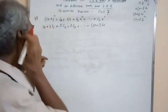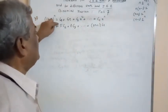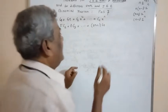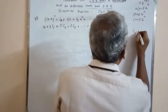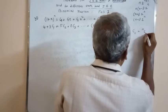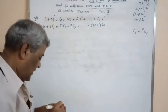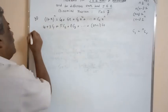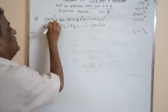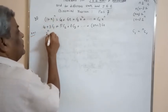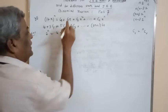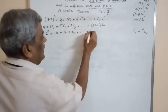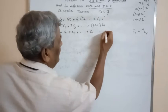Given that this binomial expansion equals that, we need to find the value. Here, cr is equal to nCr. This is the formula. Now, putting x=1 on that, we get 2^n = c0 + c1 + c2 + ... + cn. Let this be equation 1.